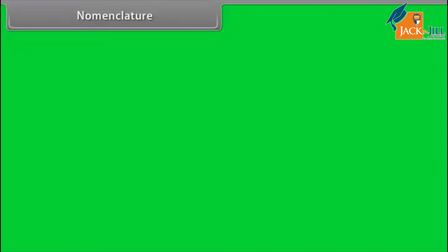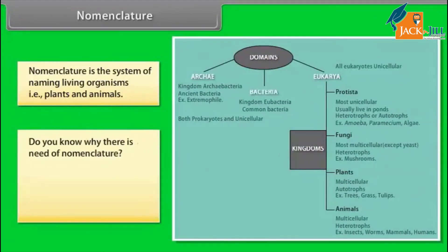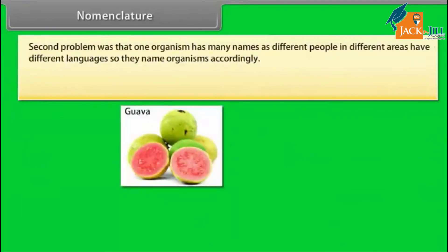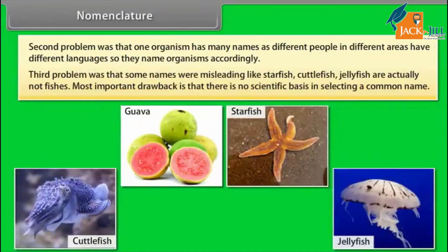Nomenclature is the system of naming living organisms, that is, plants and animals. Common names cover only localized organisms and do not cover plants and animals of the entire earth. A second problem is that one organism has many names, as different people in different areas have different languages and name organisms accordingly. A third problem is that some names were misleading — starfish, cuttlefish, and jellyfish are actually not fishes. Most importantly, there is no scientific basis in selecting a common name.